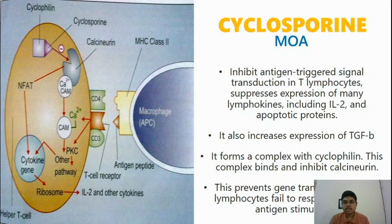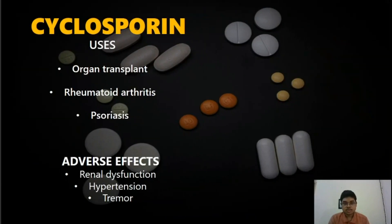Cyclosporine also increases expression of TGF-beta. It forms a complex with cyclophilin, which binds and inhibits calcineurin. This prevents gene transcription and T lymphocytes fail to respond to specific antigen stimulation. Cyclosporine is used in organ transplantation, rheumatoid arthritis and in psoriasis cases. Its adverse effects include renal dysfunction, hypertension and tremor.